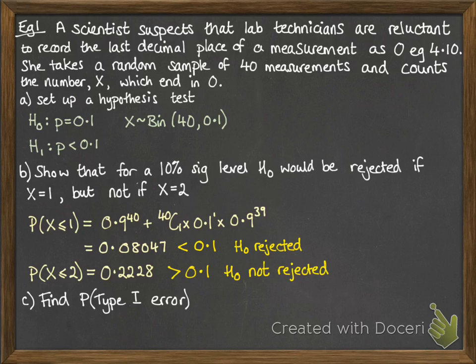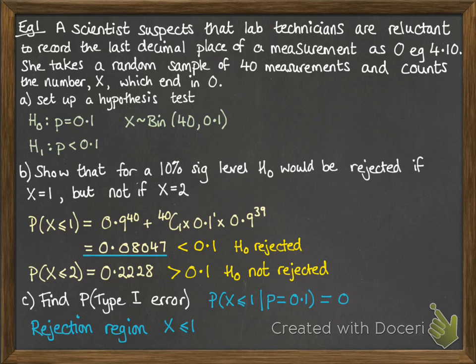Part c: find the probability of a type 1 error. This means we have a rejection region of X ≤ 1. Probability of a type 1 error means we're looking for the probability that we land within that rejection region, given that the null hypothesis was true, given that p = 0.1. That's the calculation we just worked out in part b. So the probability of a type 1 error is 0.0805.